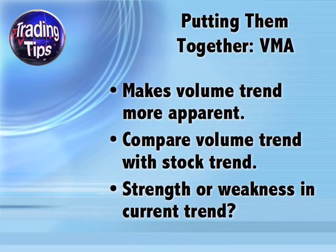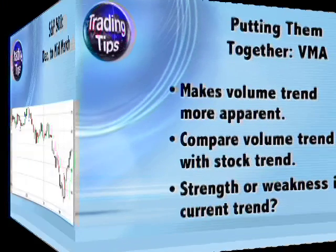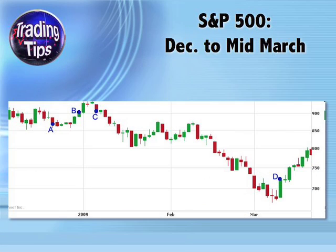Now, putting them together, we have volume moving average. This moving average looks at a stock's volume instead of its price. Since volume can be volatile and spiky, volume moving average — or VMA — makes volume trends more apparent. You can then compare a stock's price trend with its volume trend to see if there is strength or weakness in the current trend.